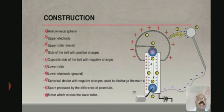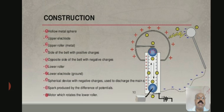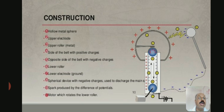Now for construction, refer to the figure. It consists of: first, a hollow metal sphere; second, the upper electrode; third, the upper roller, which is made of metal. Next is one side of the belt with positive charge and the opposite side of the belt with negative charge. Then the lower roller, and next the lower electrode at the ground. There is also a spherical device with negative charges used to discharge the main source, and a motor which rotates the lower roller. Sparks are produced by the difference of potentials.